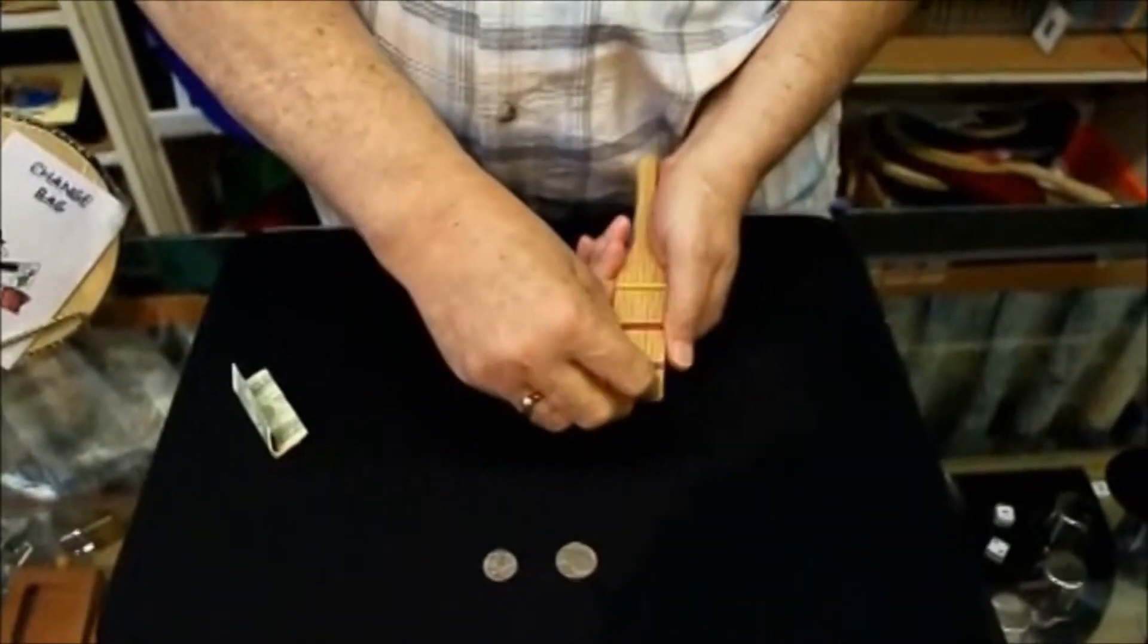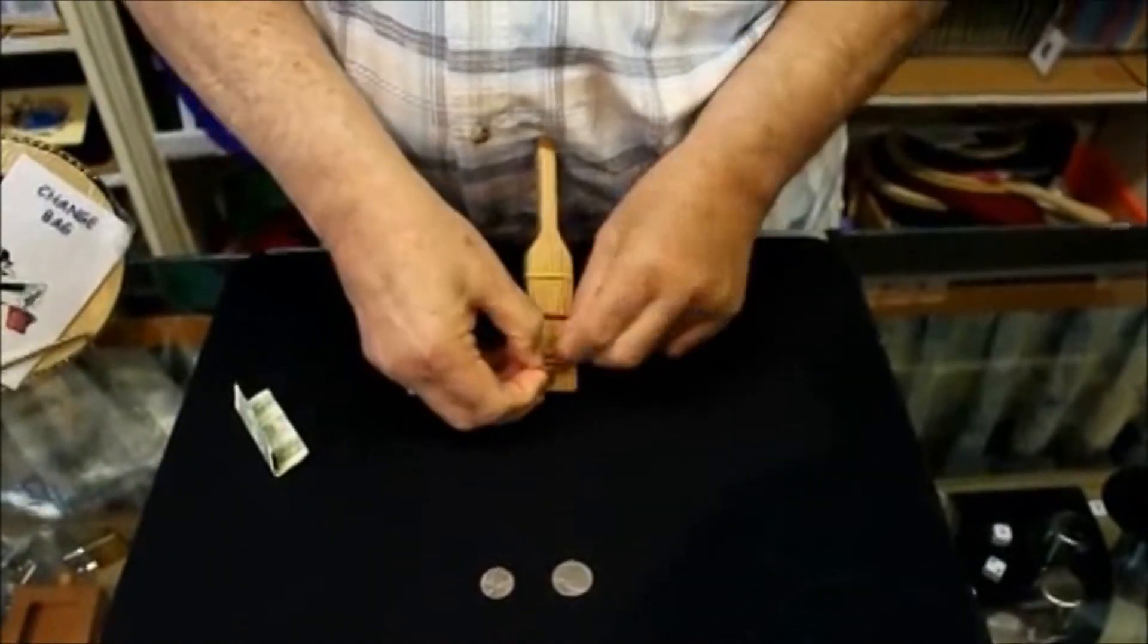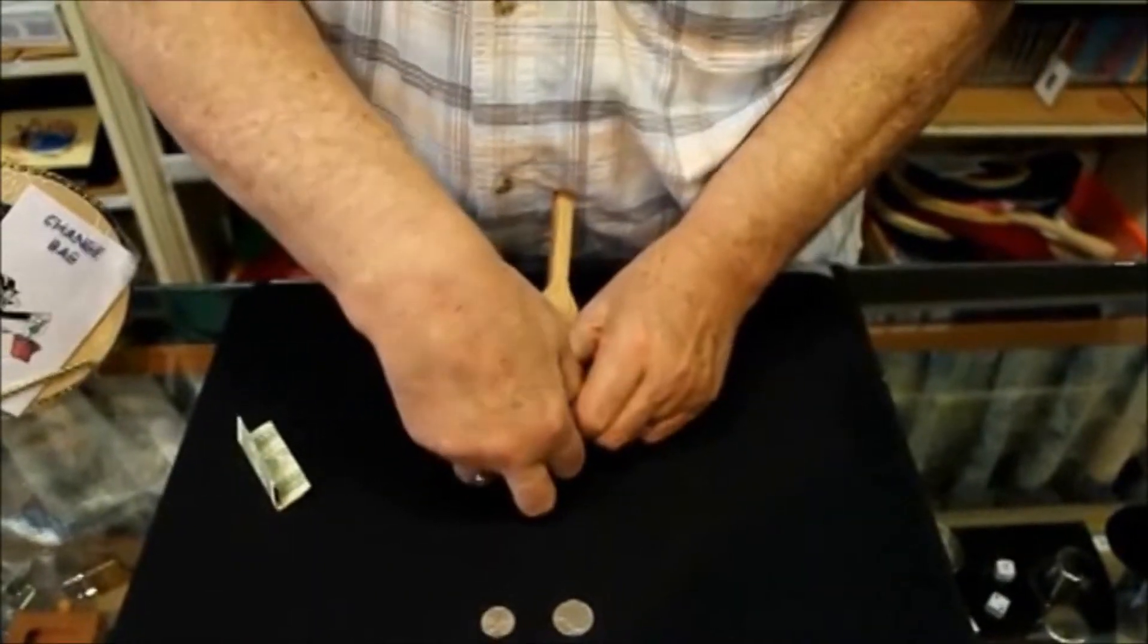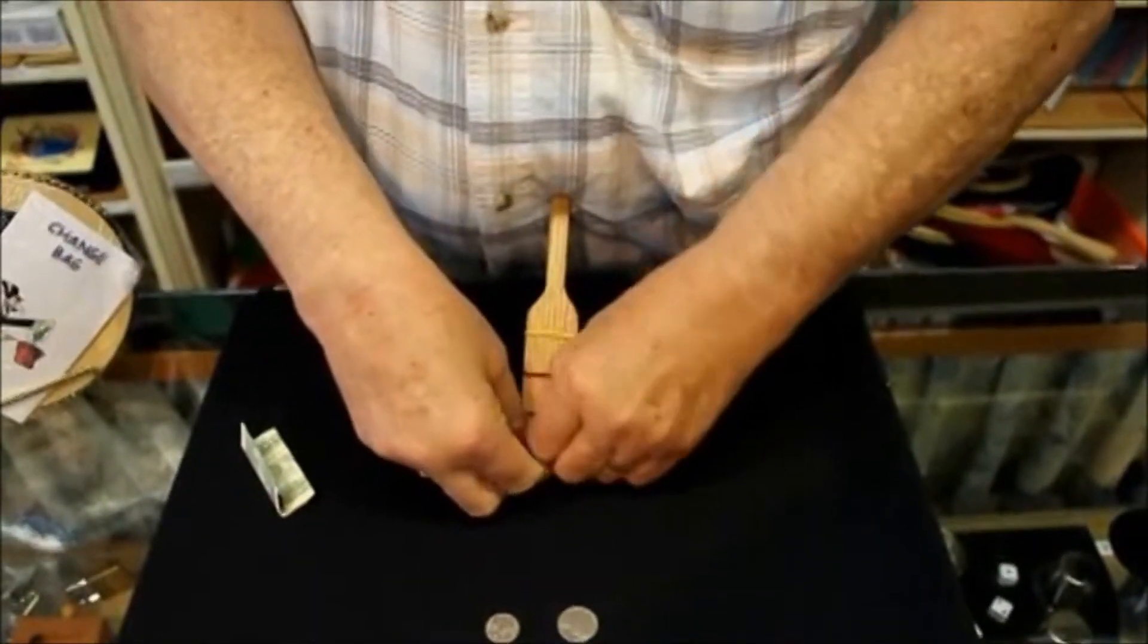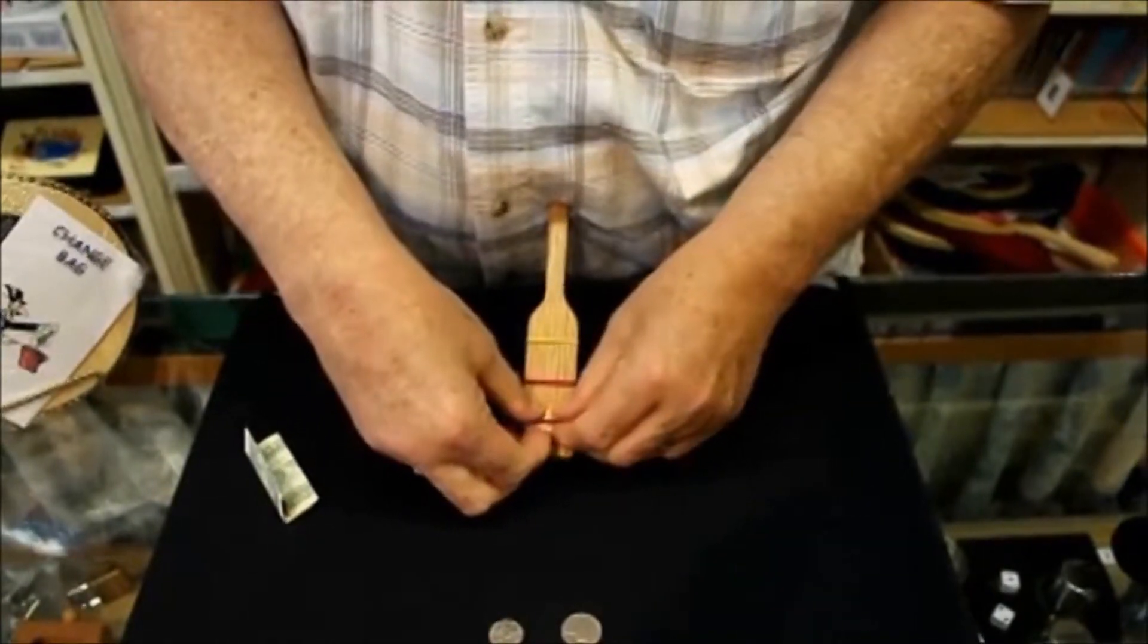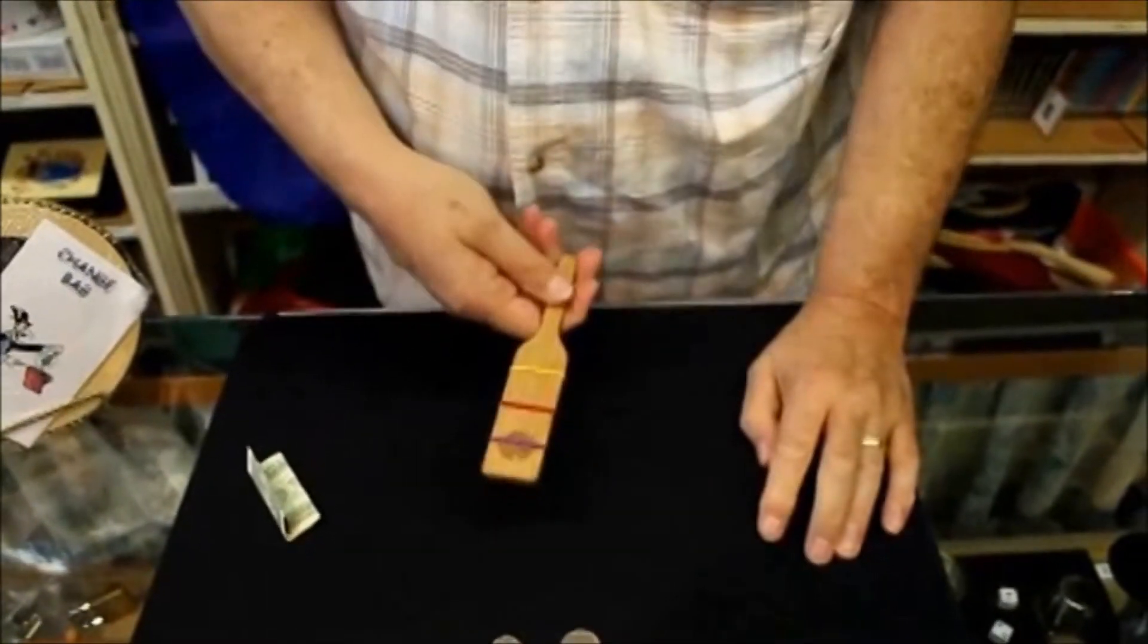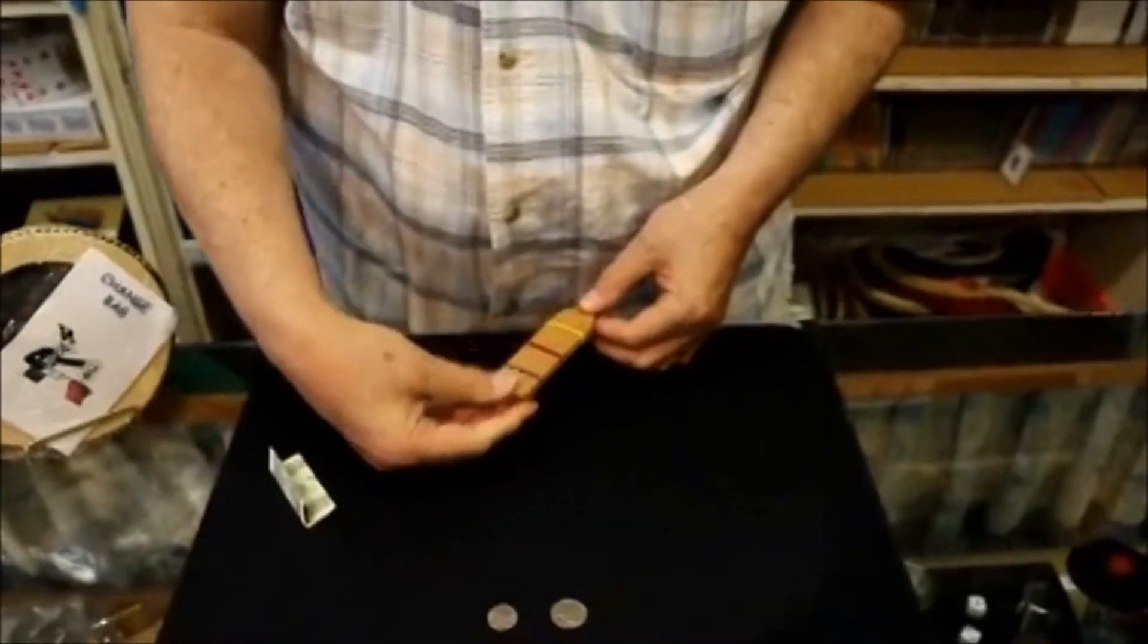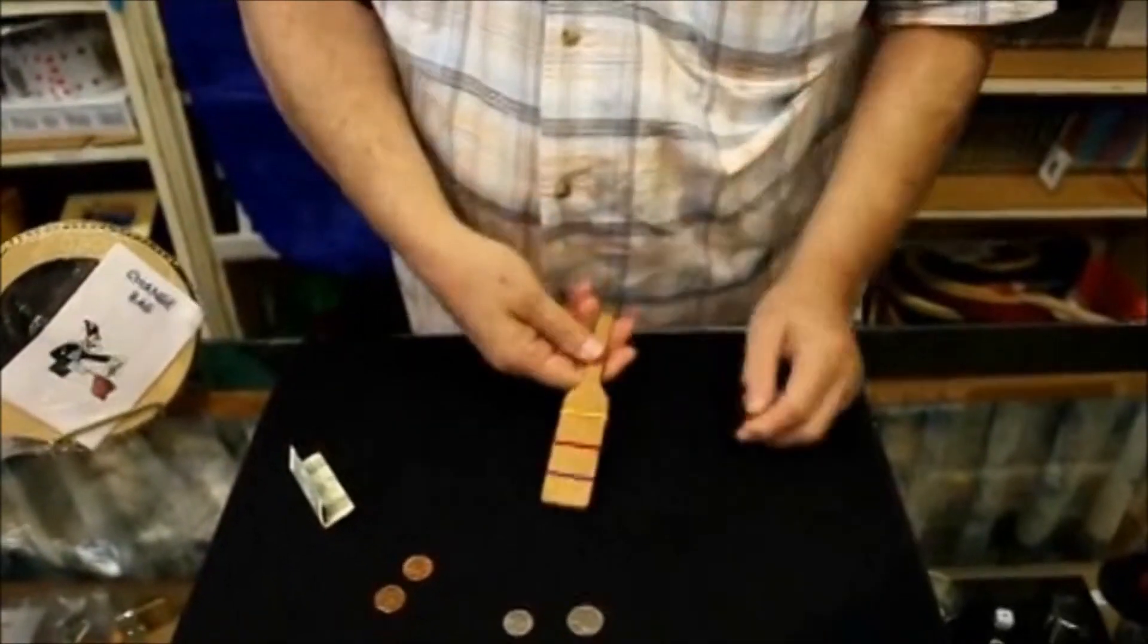You put a penny there. You actually put it under the rubber band. Tap it one time. You get two pennies. Look, I'll take them out. Show the paddle empty again.